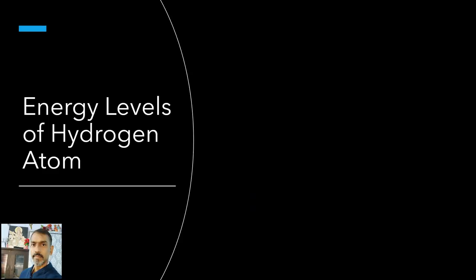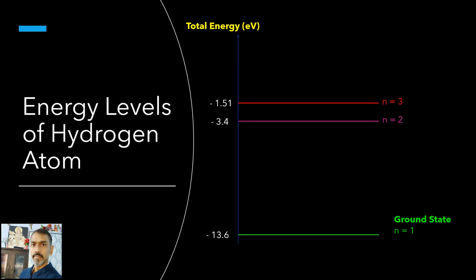The energy of an atom is the least, in fact largest negative value, when its electron is revolving in an orbit closest to the nucleus, that is the one for which n is equal to 1, called the ground state. The energy of this state is minus 13.6 eV. Therefore the minimum energy required to free the electron from the ground state of the hydrogen atom is 13.6 eV. It is called the ionization energy of the hydrogen atom. This prediction of the Bohr's model is in excellent agreement with the experimental value of ionization energy. For n is equal to 2, the energy is minus 13.6 divided by 2 square, that is minus 3.40 eV. Similarly, for n is equal to 3, the energy is minus 13.6 divided by 3 square, that is minus 1.51 eV. Thus, as the excitation of hydrogen atom increases, that is as n increases, the value of minimum energy required to free the electron from the excited atom decreases.